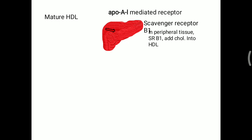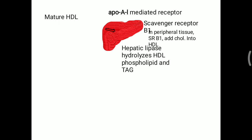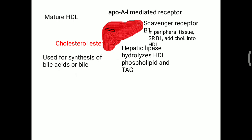SR-B1 present over peripheral tissue does not internalize cholesterol into the liver or tissue, but instead adds cholesterol into the HDL, converting it into spherical shape. Once the HDL and cholesterol are taken up inside the liver, hepatic lipase hydrolyzes the HDL molecule — including phospholipids and triacylglycerol. The HDL is metabolized inside the liver by hepatic lipase. The cholesterol ester is then used for synthesis of bile acids and excreted as bile salts.